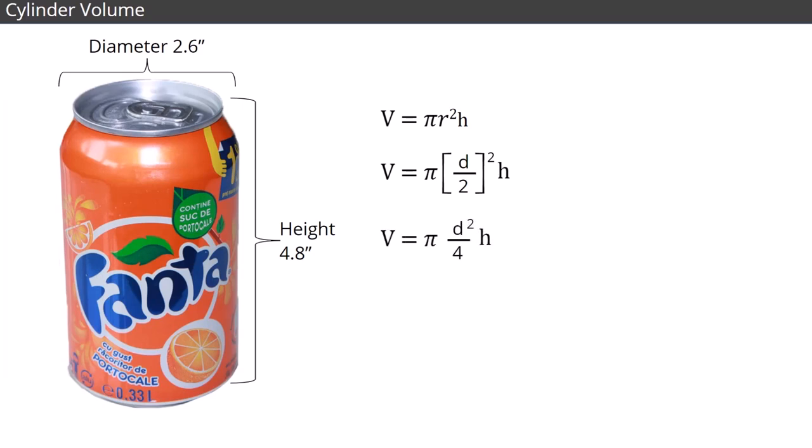This is what we use. Volume equals pi times the diameter squared, times the height, and all divided by 4.